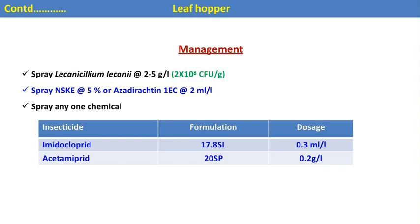For management of leafhoppers: Lecanicillium lecanii, an entomopathogenic fungus, is mostly used against all types of sucking pests. NSKE and azadirachtin are also used. Imidacloprid and acetamiprid are the systemic insecticides recommended against all types of sucking pests.